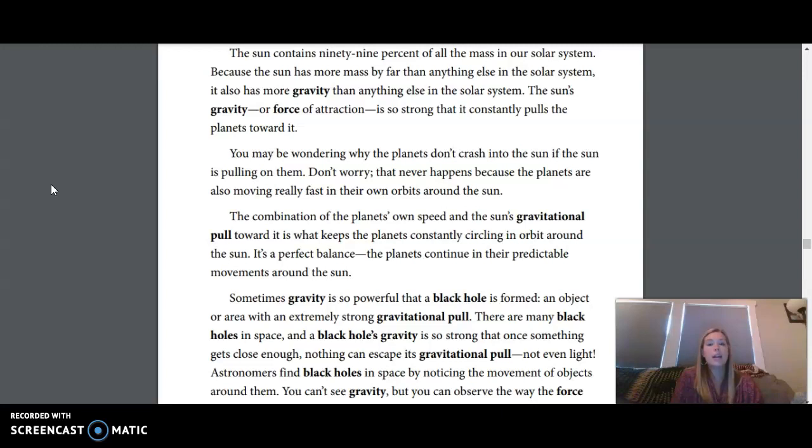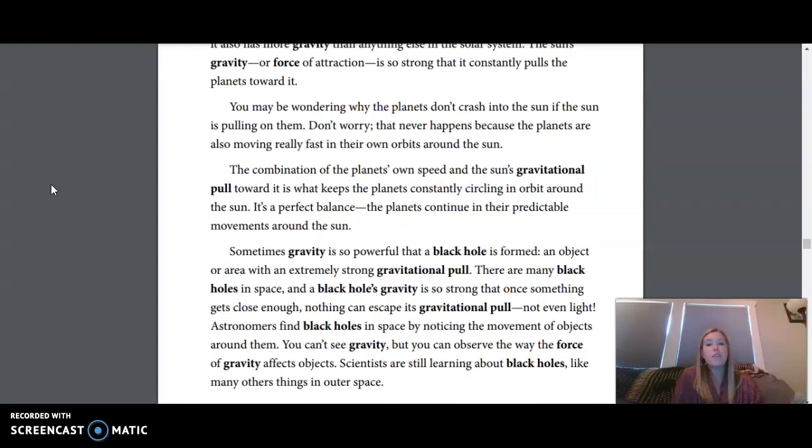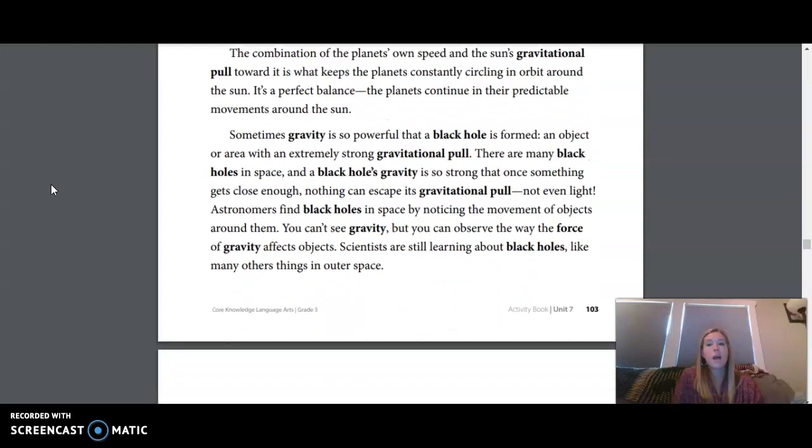The Sun contains 99% of all the mass in our solar system. Because the Sun has more mass, by far, than anything else in the solar system, it also has more gravity than anything else in the solar system. The Sun's gravity, or force of attraction, is so strong that it constantly pulls the planets toward it. You may be wondering why the planets don't crash into the Sun if the Sun is pulling them. Don't worry, that never happens, because the planets are also moving really fast in their own orbits around the Sun. The combination of the planets' own speed and the Sun's gravitational pull toward it is what keeps the planets constantly circling in orbit around the Sun. It's a perfect balance. The planets continue in their predictable movement around the Sun.